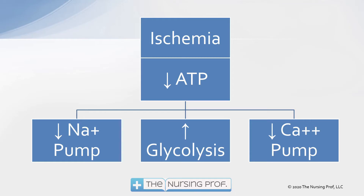So this is what's going on in the cell that ends up causing damage from these free radicals. We have ischemia, which is causing a decrease in ATP production. That decrease in ATP production is going to cause three major things to happen: a decrease in the sodium-potassium pump, an increase in glycolysis — so we're breaking down glucose — and a decrease in our calcium pump. We know how important calcium is to many of the tissues of the body, especially those muscle tissues.